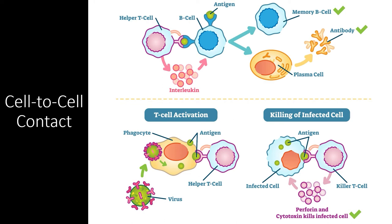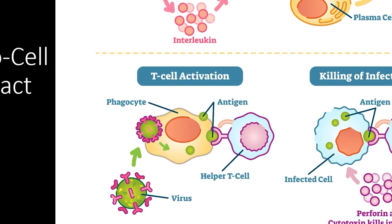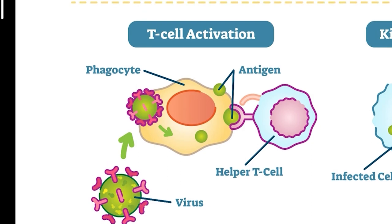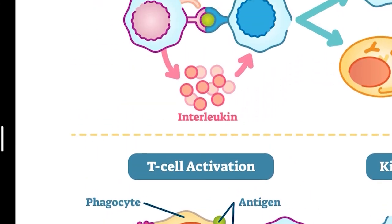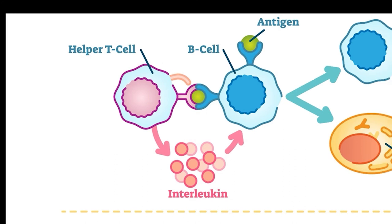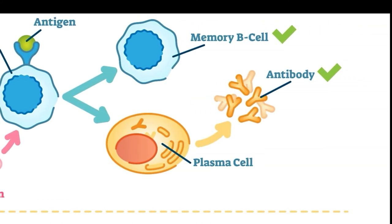It is important to realize that different cells can react to encountering another cell in different ways. For example, helper T cells can learn what the antigen of an invading virus looks like when trained by a phagocytic antigen-presenting cell. Then, through another cell-to-cell contact, helper T cells can train B cells, which go on to produce the antibodies an organism needs to fight off an infection.